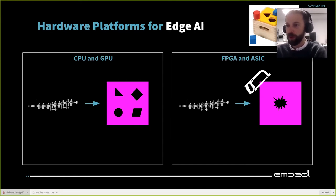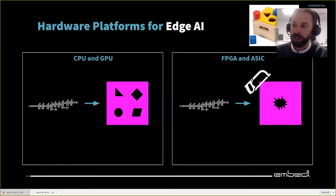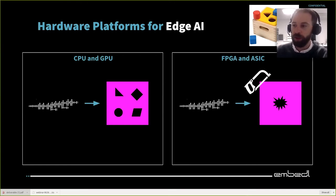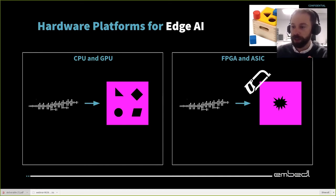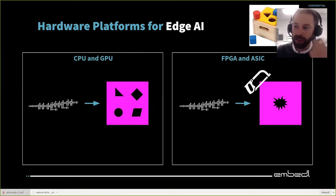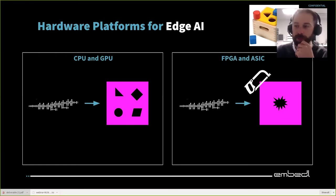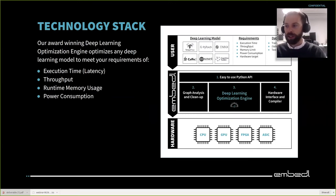Thinking about CPU and GPU flexibility as defined blocks — you need to take your model and make it fit the hardware platform. With FPGA and ASIC you have much more flexibility, like having a saw to cut the shape you want. You can change the model using various deep learning optimization techniques and combine this to get a very efficient solution. This is what makes our field super exciting. The technology stack then goes from a model developed in TensorFlow or PyTorch, with customer requirements for execution time, throughput, and memory use, and we optimize and interface various hardware backends.